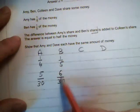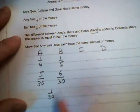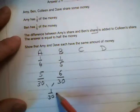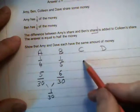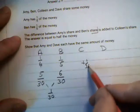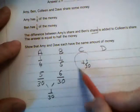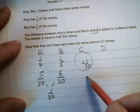Now we can find the difference. The difference between B and A is 1 thirtieth. So we add that on to Colleen's share. So let's add 1 thirtieth. And the answer is equal to half the money. So Colleen's share makes half the money.